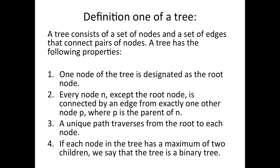So now we're going to look at two definitions of a tree. This is the first definition. A tree consists of a set of nodes and a set of edges that connect pairs of nodes. A tree has the following properties. One node of the tree is designated as the root node. Every node except the root node is connected by an edge from exactly one other node P where P is the parent of it.